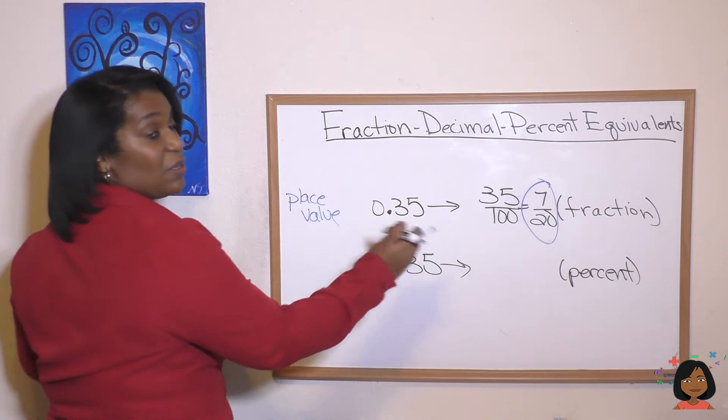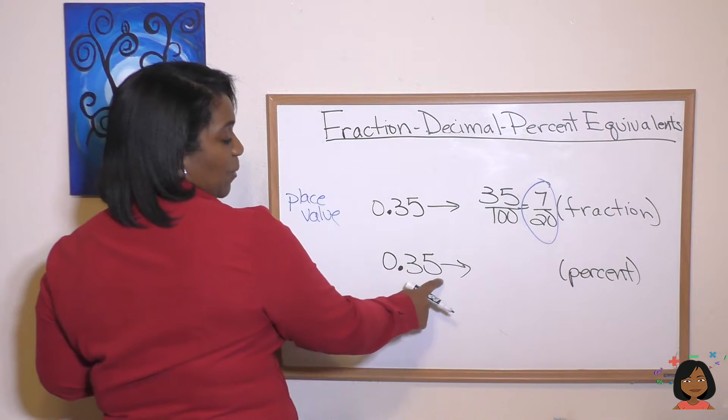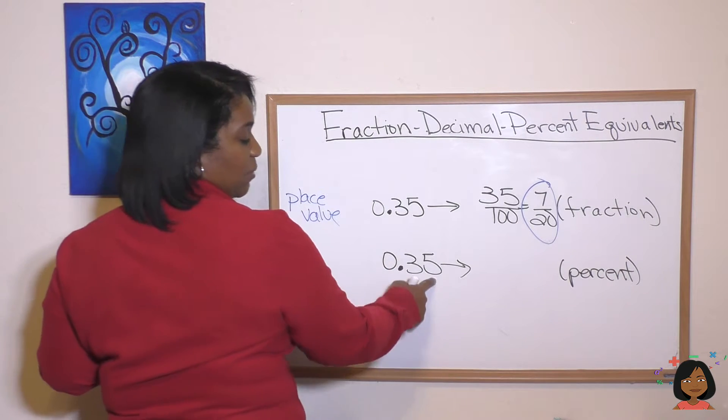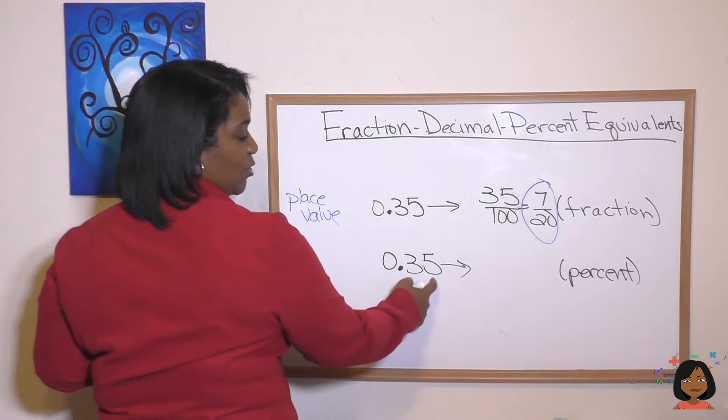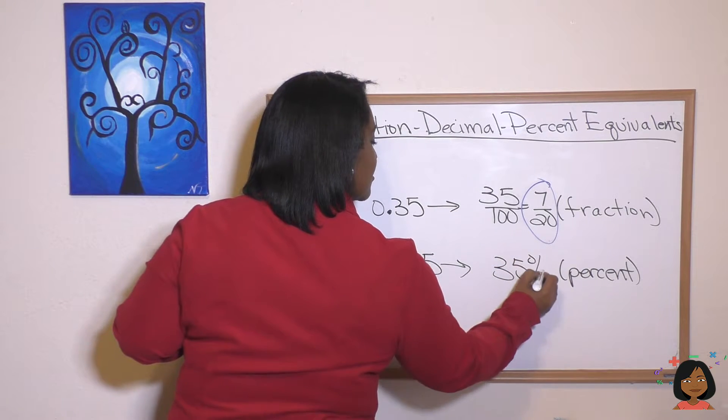Now what about decimal to percent? Well those are really easy because think about it. We know that percent is always something out of a hundred. So we go to the hundredths place and we look at it. It says 35. So all we're going to do is move this decimal two spaces to the right. Thirty-five percent.